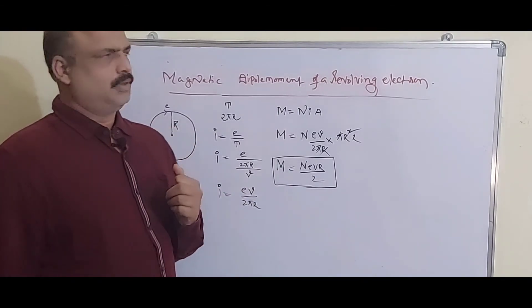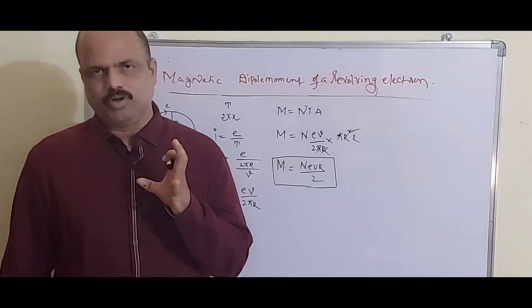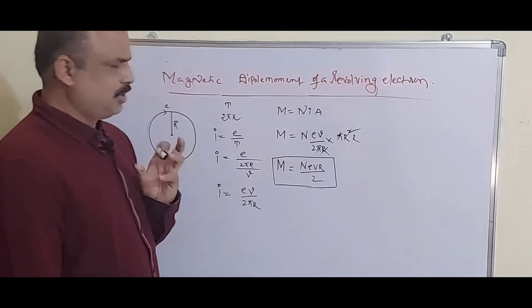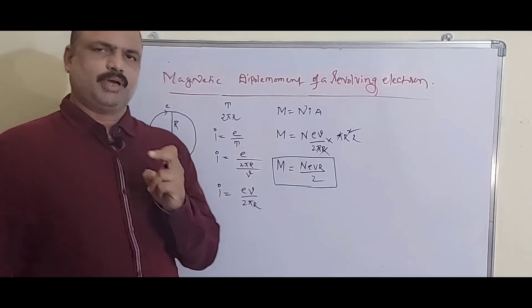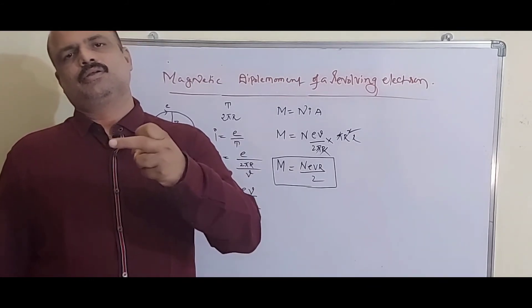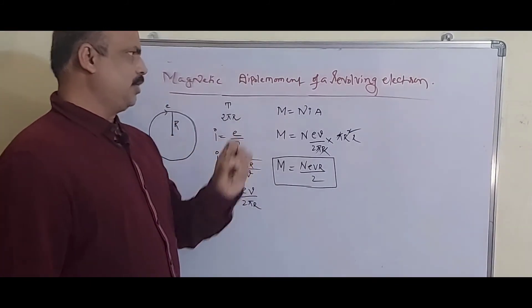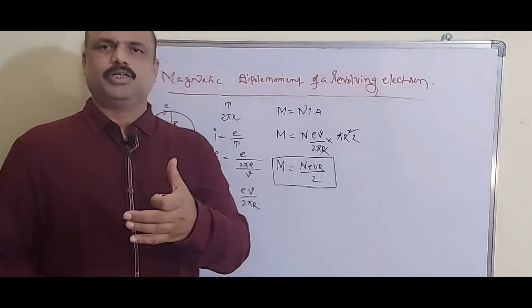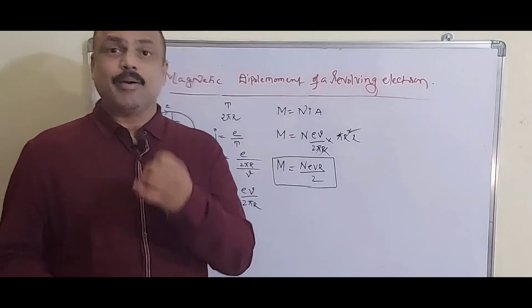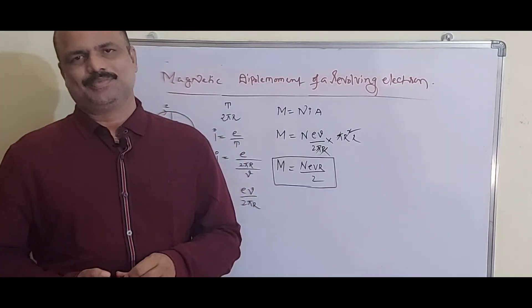In this chapter, there are three important questions for board examinations. Number one: Biot-Savart law. Number two: magnetic induction on the axis of a circular coil. Number three: magnetic dipole moment of a revolving electron. Number four, which we will discuss in the next video, is Ampere's law. All the best.